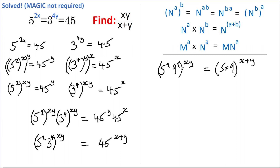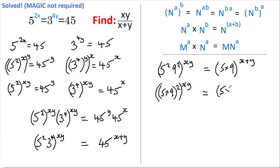Next, I'm going to take these squares outside of the bracket, so this becomes 5 times 9, all squared, all to the power of xy. And here I'm going to take 5 times 9, square it, and then take the square root.